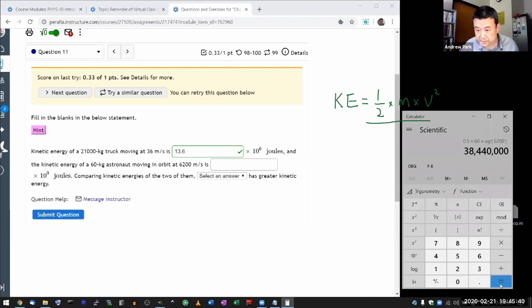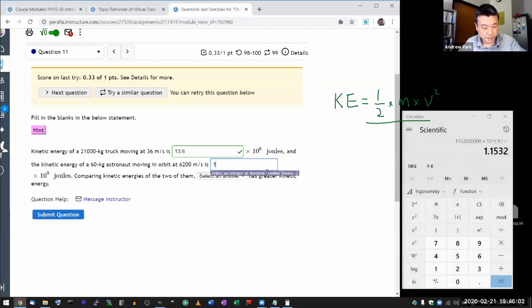When I type in equals, that gives me, okay, 0.5 times 60, yeah, 6200 squared. All right, I get the huge number. I guess that's why I have this times 10 to the 9. So let me divide it by 10 to the 9. Verify that. Type in equals. I get 1.15. So that must be the correct answer.